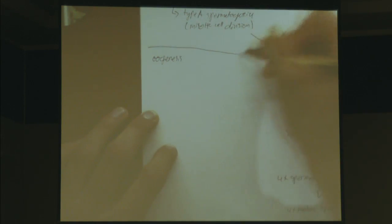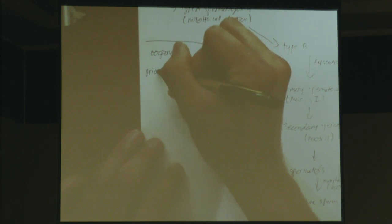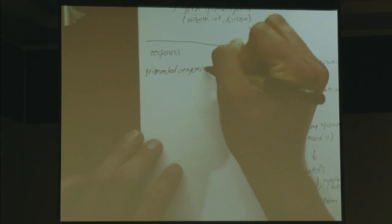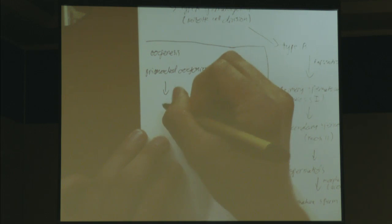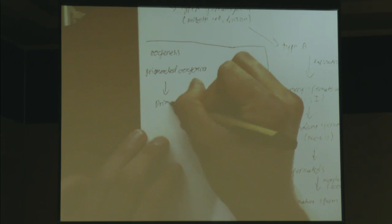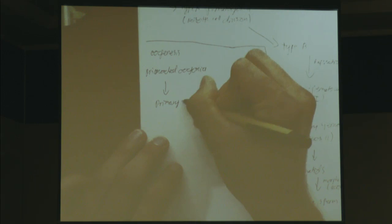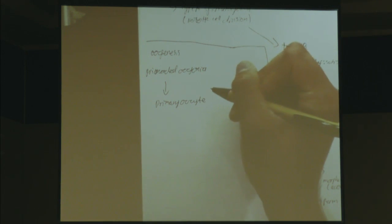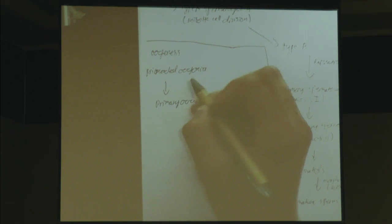Now on the female side, this process is called oogenesis. Your anatomy book doesn't go into as much detail as I'd like, so I'll keep it brief. It follows a similar trend: we start out with primordial oogonia, which differentiate into primary oocytes, skipping a couple steps in here with primordial oogonia.